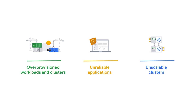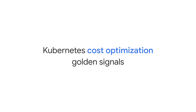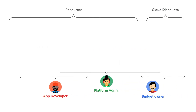Overcoming these issues can be challenging, especially in Kubernetes, because Kubernetes is a complex, distributed system with many features, and when used incorrectly, it can lead to reliability and performance issues and increase costs. But don't worry. After several years of iterating over numerous metrics and feedback from our customer engagements, we have identified the golden signals that allow you to continuously deliver business value by running reliable, performant, and cost-efficient applications on Kubernetes clusters on any cloud platform. The golden signals are divided into two categories: resources and discounts. App developers and platform administrators are responsible for the resource optimizations, while platform administrators and budget owners are responsible for the discount optimizations. Note that roles within each organization may differ.